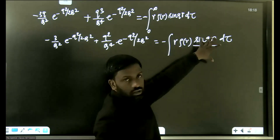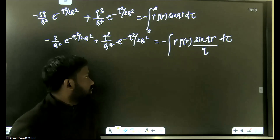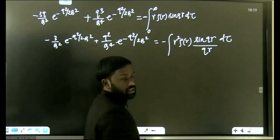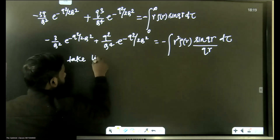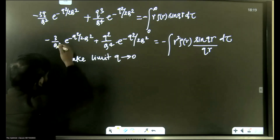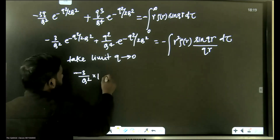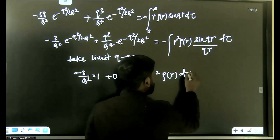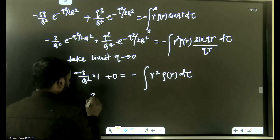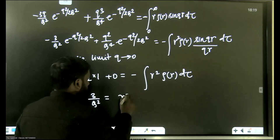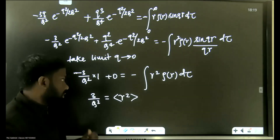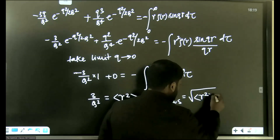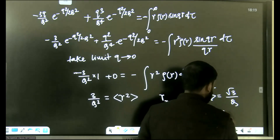To remove the sine term, we use the limit sin(θ)/θ → 1 as θ → 0. Taking the limit as q → 0, sin(qr)/(qr) → 1, so the right side becomes ∫r²·ρ(r)·dτ = ⟨r²⟩. The left side gives 3/Q². Therefore, the RMS radius is √⟨r²⟩ = √3/Q, so option C is correct.